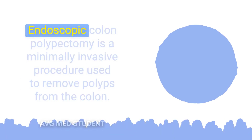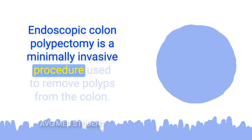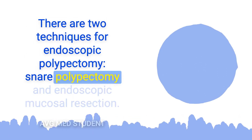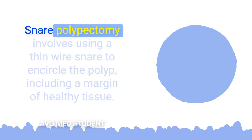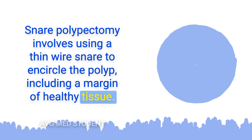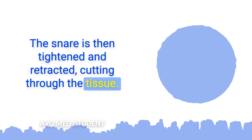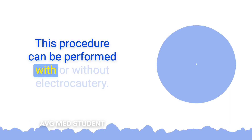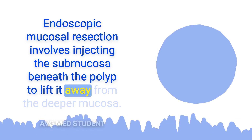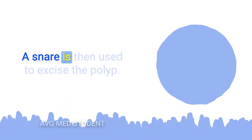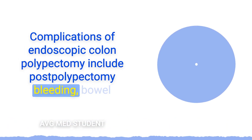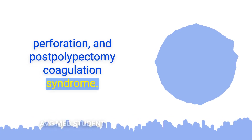Endoscopic colon polypectomy is a minimally invasive procedure used to remove polyps from the colon. There are two techniques: snare polypectomy, which involves using a thin wire snare to encircle the polyp including a margin of healthy tissue, then tightening and retracting the snare to cut through the tissue — this can be performed with or without electrocautery — and endoscopic mucosal resection, which involves injecting the submucosa beneath the polyp to lift it, then using a snare to excise it. Complications include post-polypectomy bleeding, bowel perforation, and post-polypectomy coagulation syndrome.